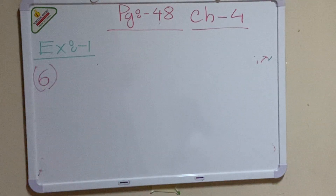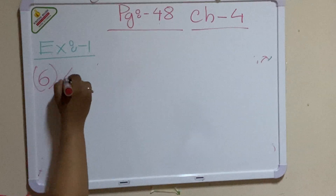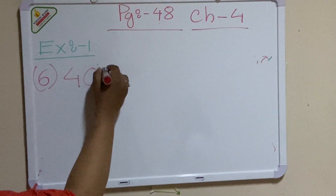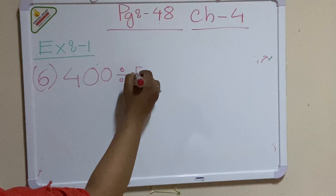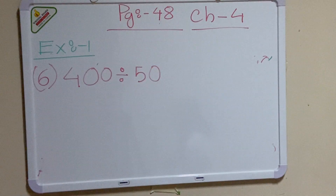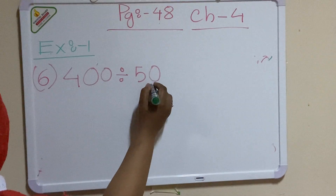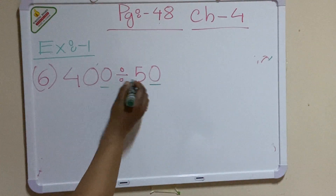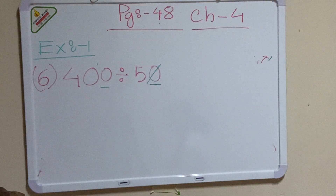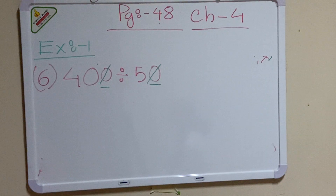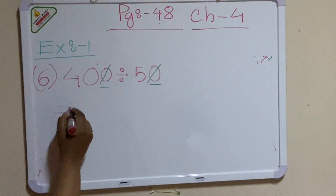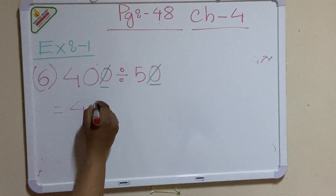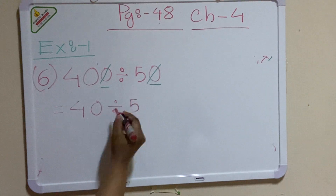Number 6 is 400 divided by 50. Look here — in the dividend there are two zeros and in the divisor there is one zero. I will cut one zero from the divisor and one zero from the dividend, leaving 40 divided by 5.